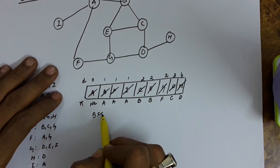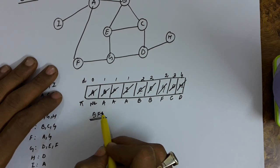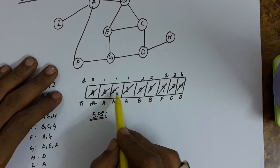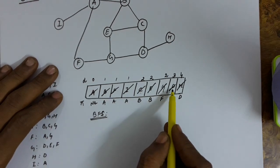If you see the BFS sequence, the order in which the vertices have got deleted from the queue is the same as the sequence of BFS. So A, B, F, I, C, E, G, D and H.